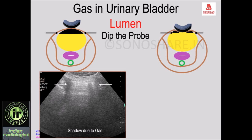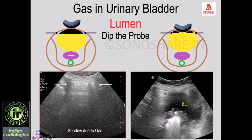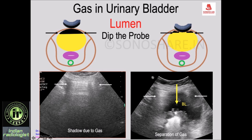As a result, we get two echogenic lines on either side producing dirty shadows, whereas in the center, because the gas is displaced, the ultrasound can travel through the urinary fluid and you are able to see the structures posterior to the bladder — here there is the rectum. Without dipping, you do not see the posterior structures because of shadowing.